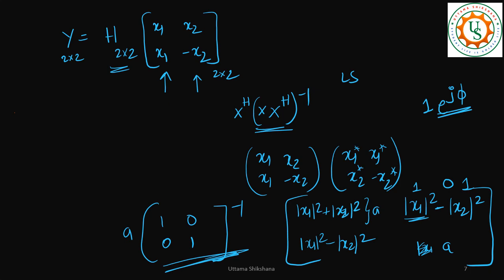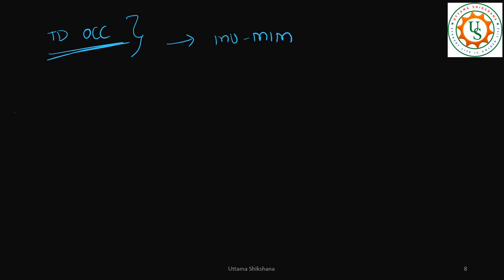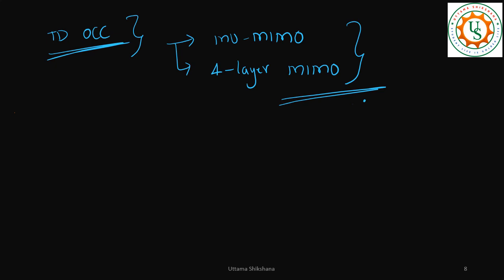I hope you have clarity on how, with frequency domain OCC, we are able to estimate the MIMO channel. This is another configuration we examined. Similarly, there is something called time domain OCC, which allows us to utilize more orthogonal ports for multi-user MIMO applications and for more layers — we just saw two layers, but you can go up to four-layer MIMO with more ports. With this I want to wind up this video. Thank you very much — if you're looking for more videos like this, please do subscribe to the channel.